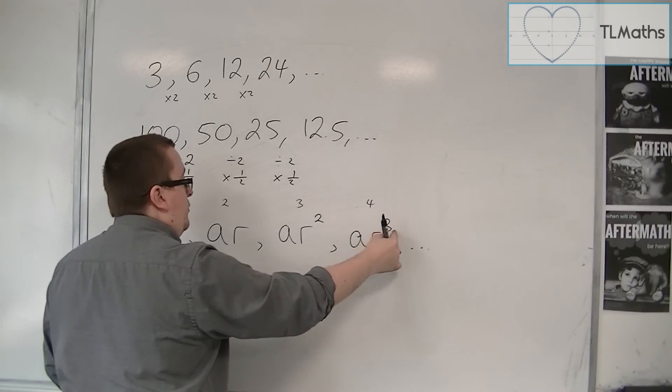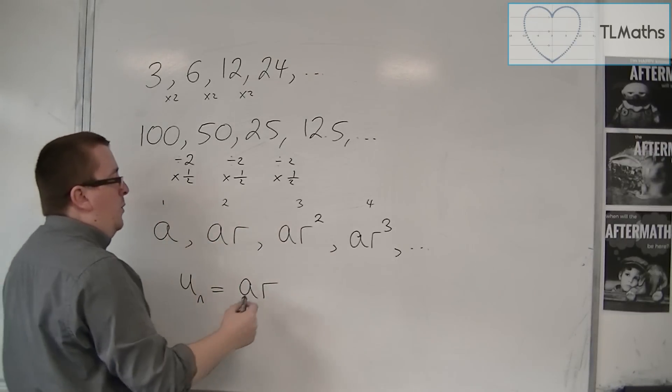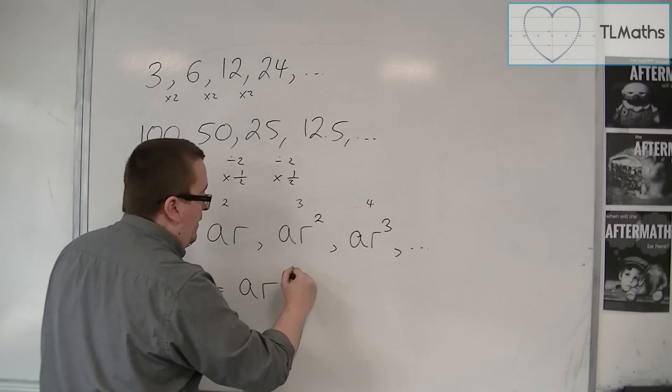So we can see that's three, that's four, two, three, one, two, zero, one. And so we need to be one less than the position.